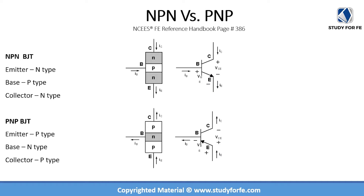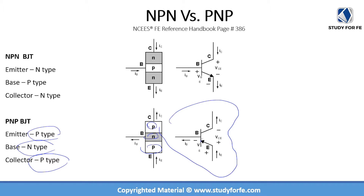For a PNP BJT, the emitter is a P-type region, the base is an N-type region, and the collector is also a P-type region. In the PNP symbol, the arrow points inwards toward the transistor, indicating the emitter. The direction of the emitter current is toward this arrow, the base current flows away from the base, and the collector current flows away from the collector.